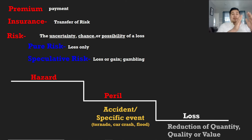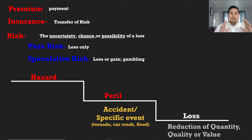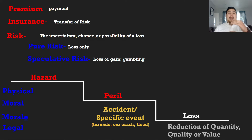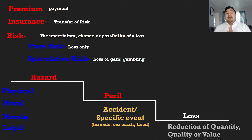Going up one more step: hazards are the cause of a peril, and since peril means accident, a hazard causes you to have an accident. There are four different hazards in this exam that you have to know: physical hazard, moral hazard, morale hazard, and legal hazard. Any one of these four different hazards can cause you to have a number of different accidents, and as long as the event is titled and specific, it will be considered a peril.